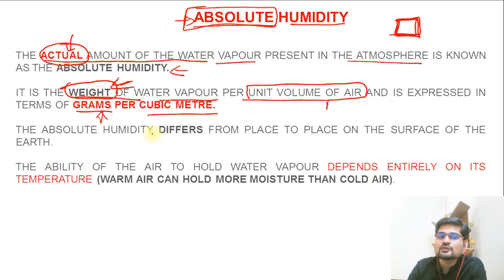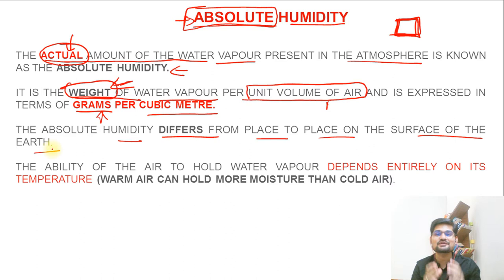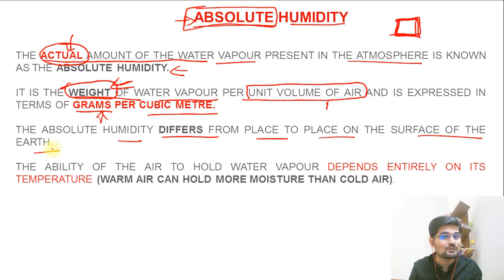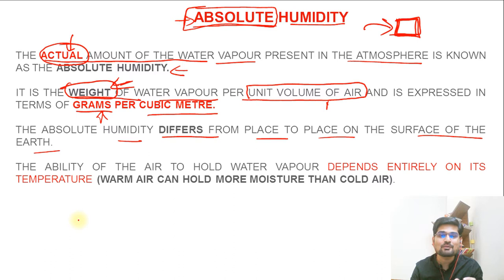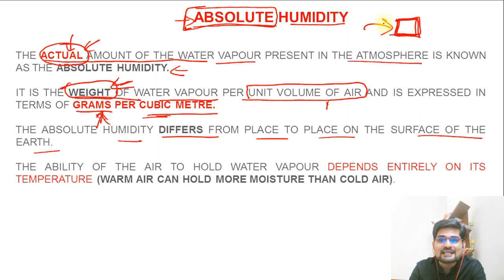The absolute humidity differs from place to place on the surface of the earth. People have this tendency to think that because it is absolute, it is fixed everywhere. Remember, it is not like that. Absolute humidity is not fixed for the entire earth - this is a global, dynamic phenomena. It is fixed for this unit volume of air; it is not fixed for every place on the earth. Absoluteness here refers to the actual measurement amount, not comparison with others.